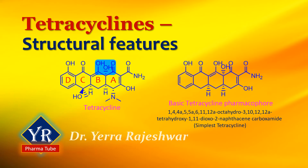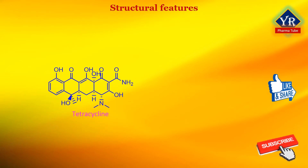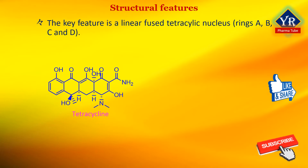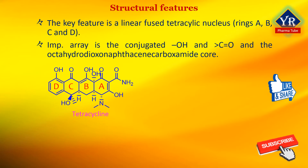In this video, we shall learn the structural features of tetracyclines. The structural features that confer antibacterial activity to the tetracyclines have been well established. The key feature is a linear fused tetracyclic nucleus — rings designated as A, B, C, and D as shown in the figure — from which a variety of functional group substituents emanate. The most important of these are an array of conjugated hydroxyl and ketone groups and the octahydro-dioxonapthazine carboxamide core itself.